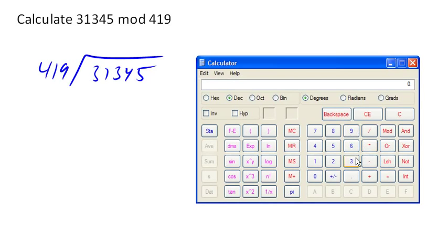So suppose I wanted to find 31,345 mod 419. So I'm wanting to divide this way. I don't know what that is. So I'm gonna pull up my calculator. And I'm gonna say 31345 divided by 419. And I get 74.890 stuff. So I know that the whole part here is 74, right?